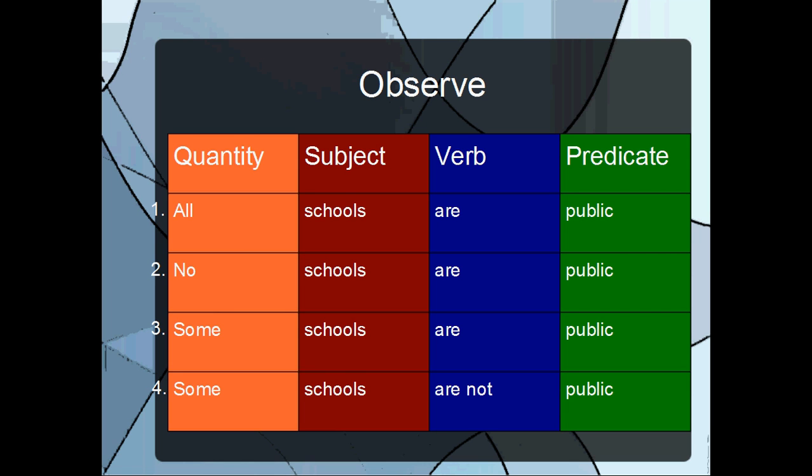For the fourth and last proposition, some schools are not public. It's saying that the category schools is partially excluded from the category public. It's saying there's at least one school which does not fall under the category public.